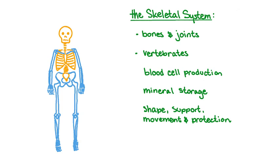The skeletal system is adapted to serve a number of functions. Our bones are the site of blood cell production, and they play a role in our immune system. They store certain ions and minerals. And the skeleton is the internal support and framework of our bodies, giving the body shape, allowing movement, and protecting our most delicate and important organs.